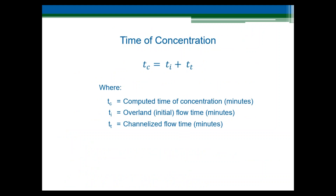After the 2- and 5-year runoff coefficients have been determined, you are ready to move on to the time of concentration. The time of concentration is comprised of two components: an overland sheet flow travel time, called overland or initial flow time, and the channelized flow time. The overall time of concentration is equal to the initial or overland flow time plus the channelized flow time.